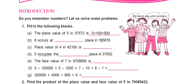Part B asks which place a digit occurs in 1,05,876 — that is about identifying the place. Part C is the place value of 4 in 2,160, which is similar to part A. Part D asks which place 5 occupies in 37,652, similar to part B. These are your homework; try them as we did in previous classes.